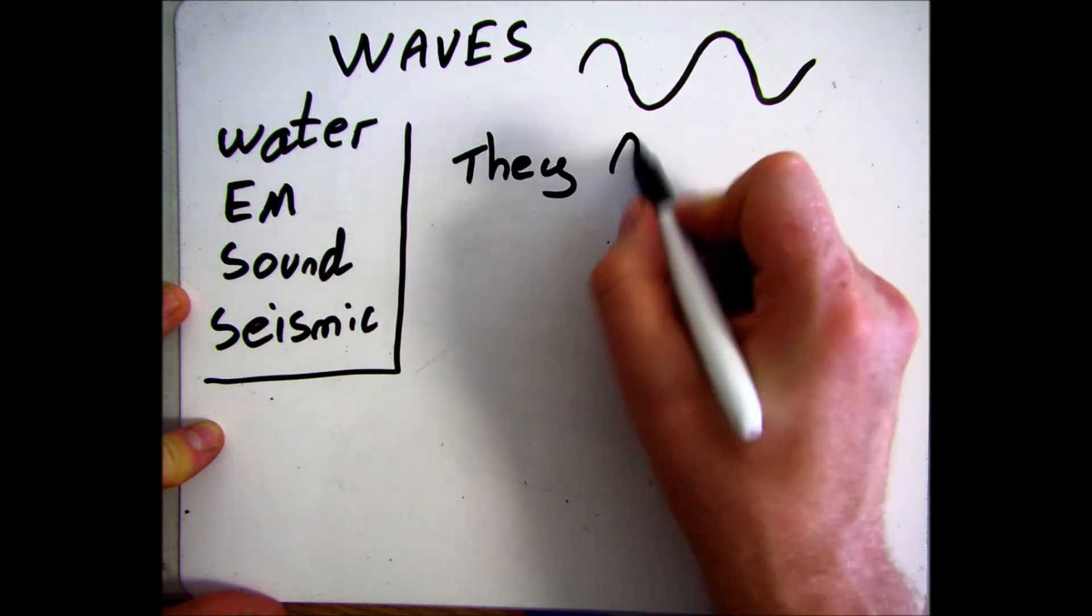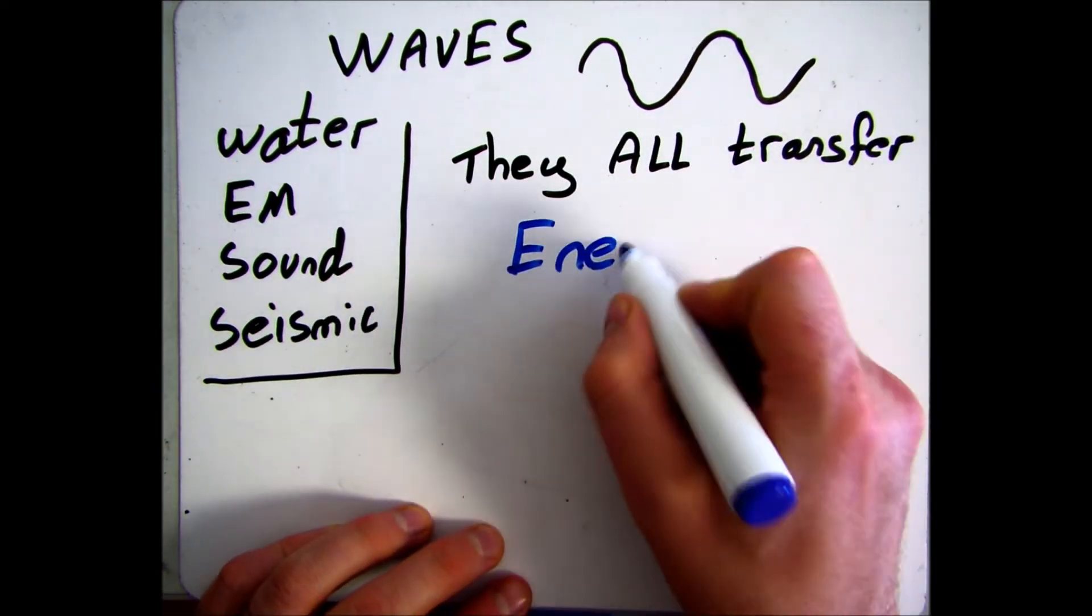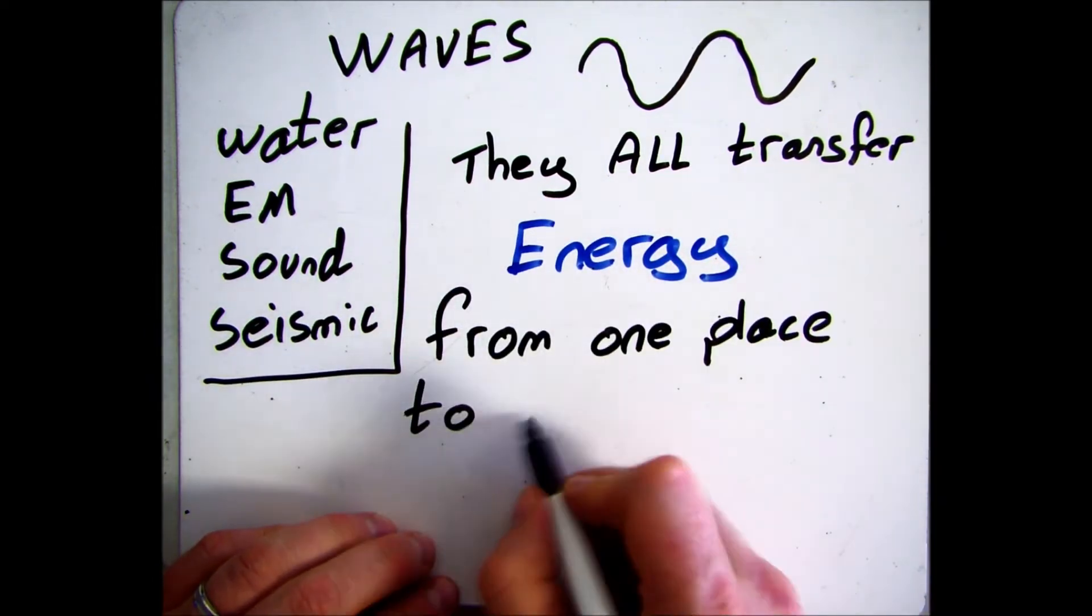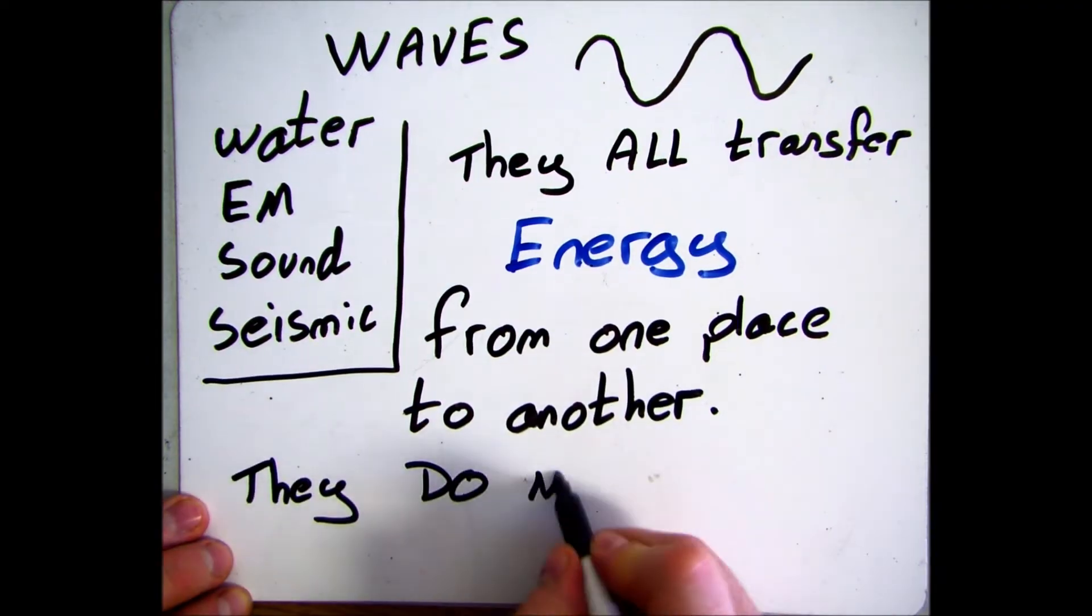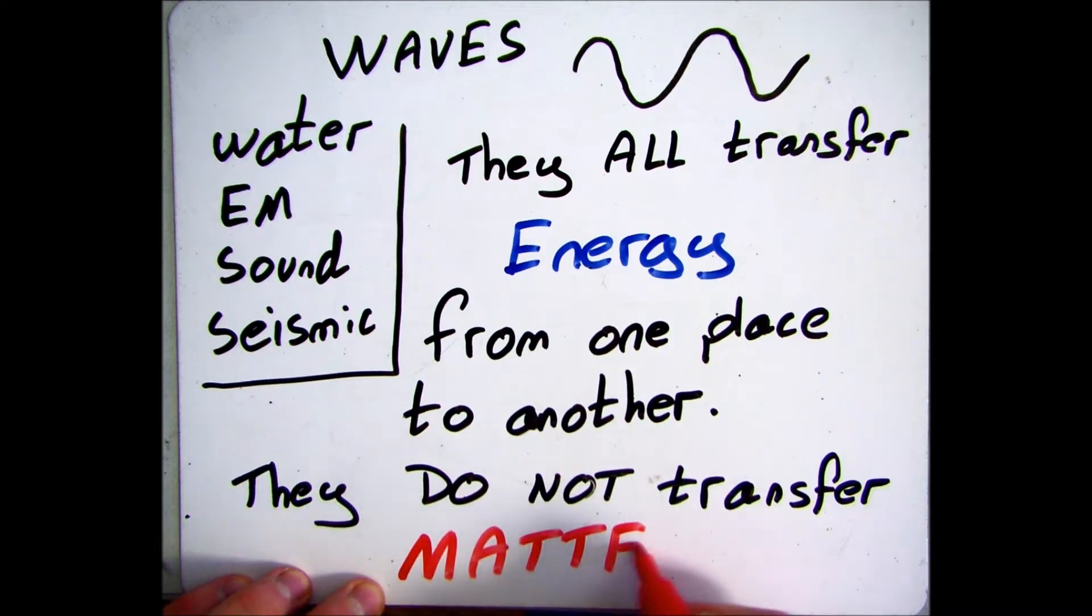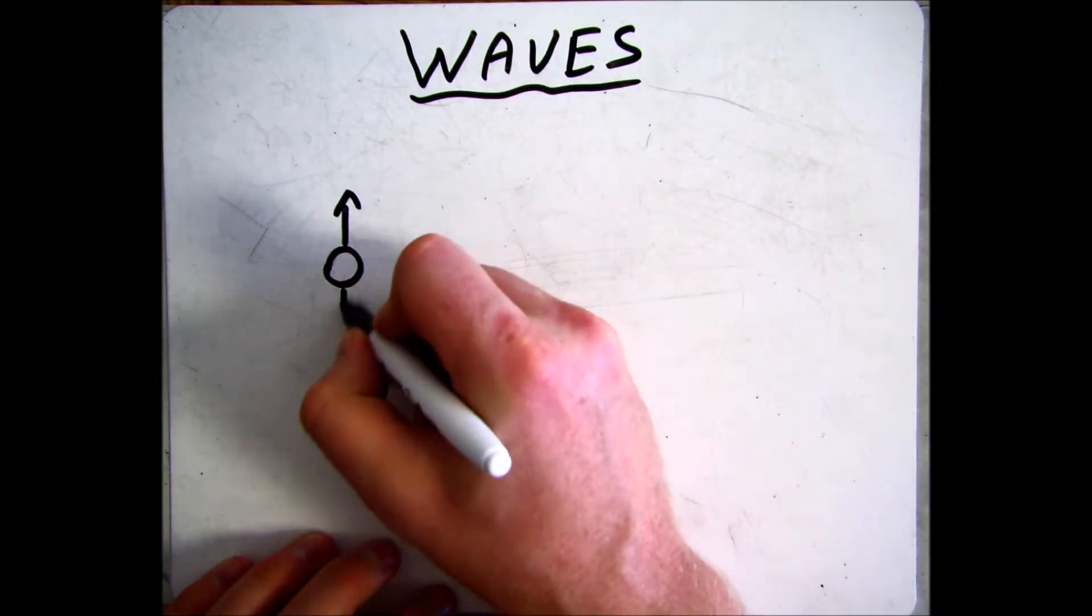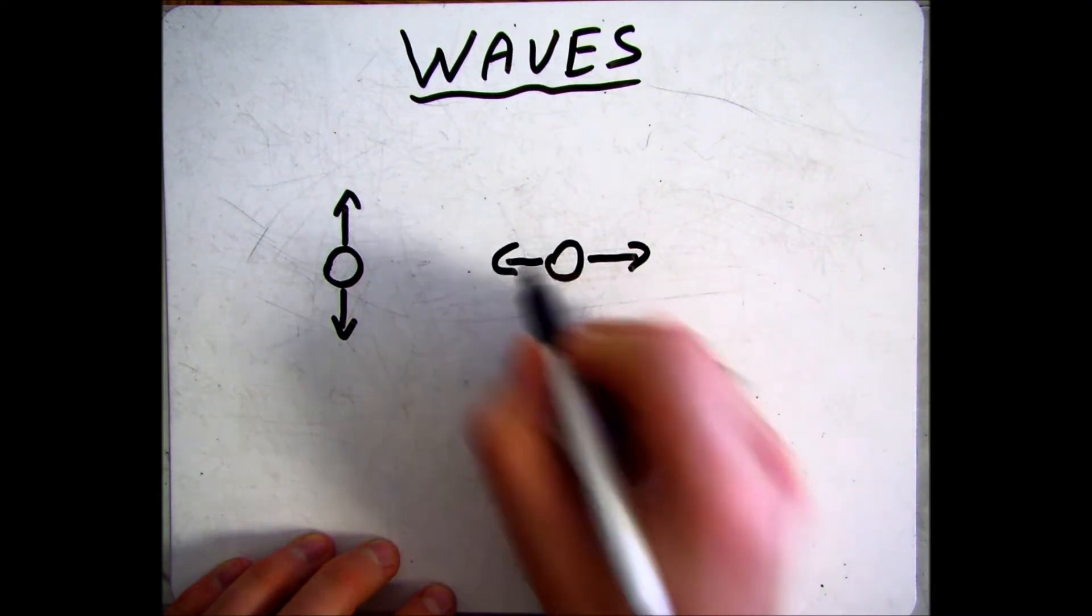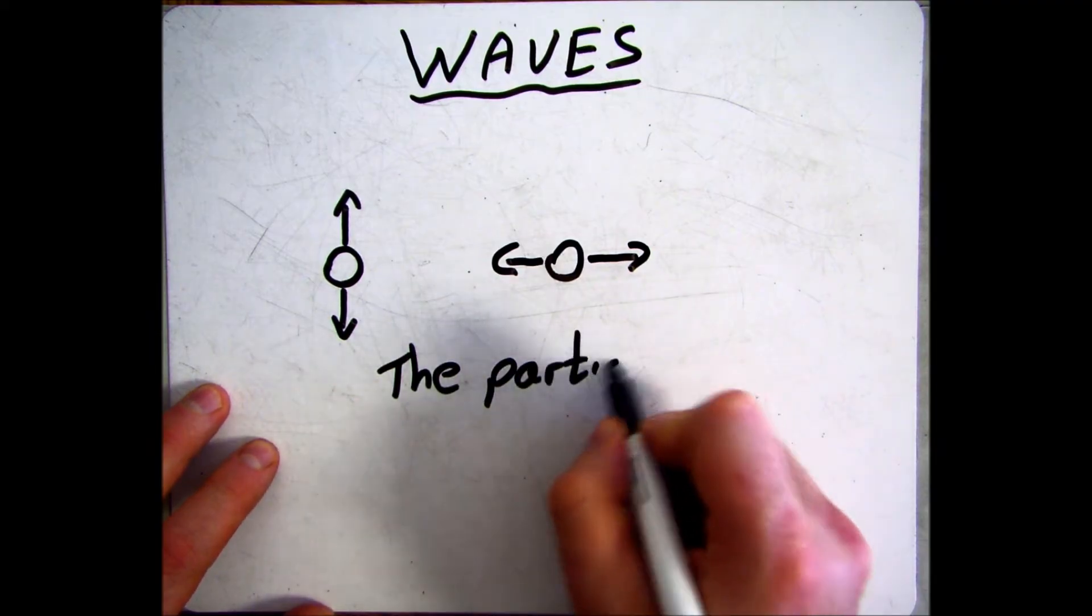All these different waves have some properties in common. They all transfer energy from one place to another and none of them transfer matter. As the wave moves through the material, the particles vibrate - they might vibrate perpendicular to the motion, they might vibrate parallel to the motion - but as the particles vibrate they transfer energy and information to the particles next to them.